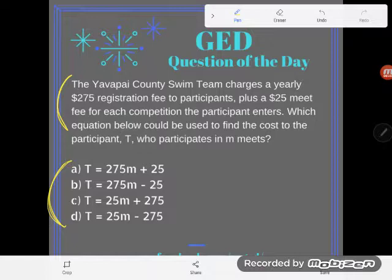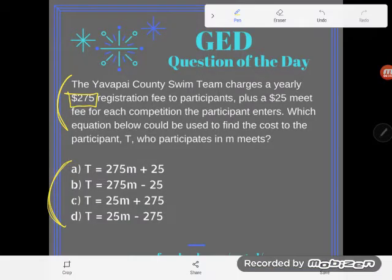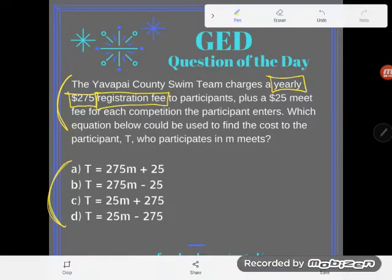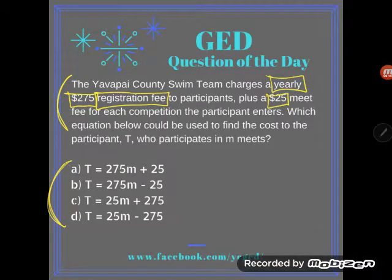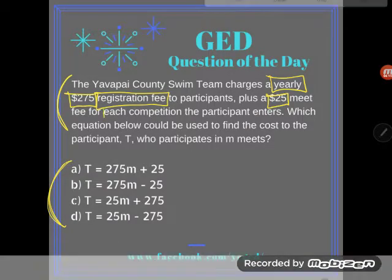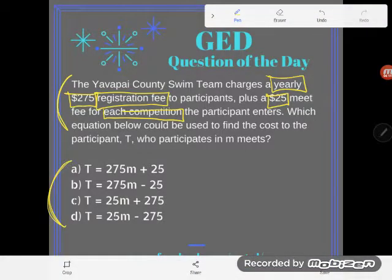Let's check it out. It says the Yavapai County Swim Team charges a yearly $275 registration fee, plus a $25 meet fee for each competition the participant enters. Which equation below could be used to find the cost to the participant T who participates in M meets?